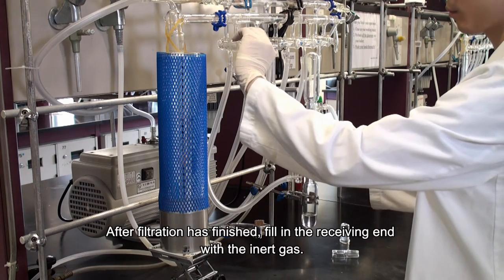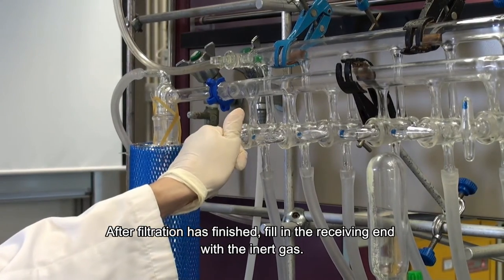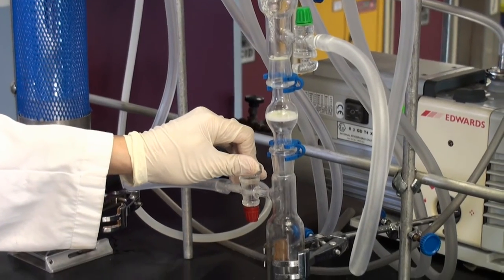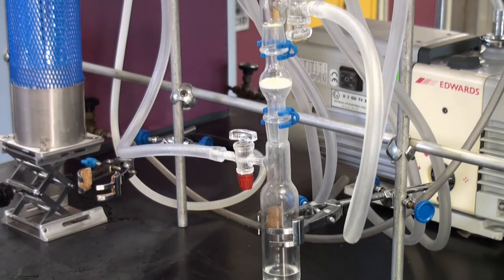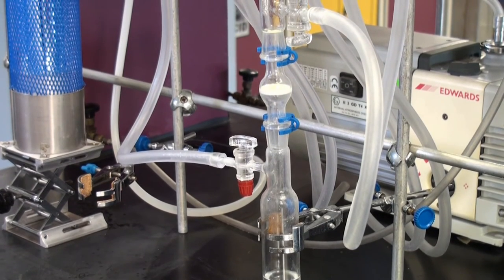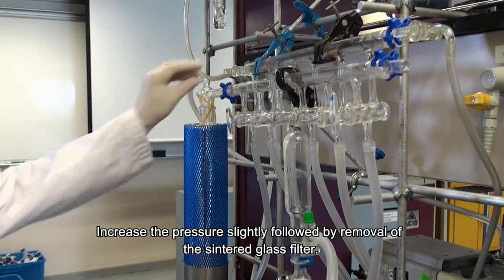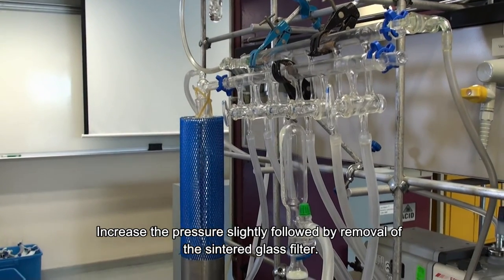After filtration has finished, fill the receiving end with inert gas. Increase the pressure slightly followed by removal of the sintered glass filter.